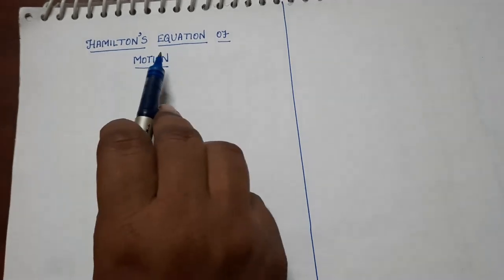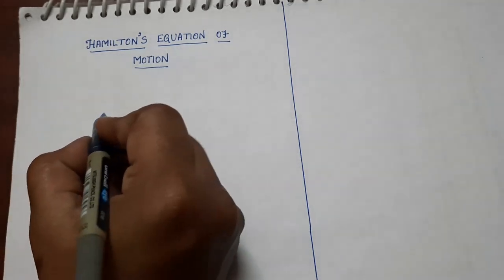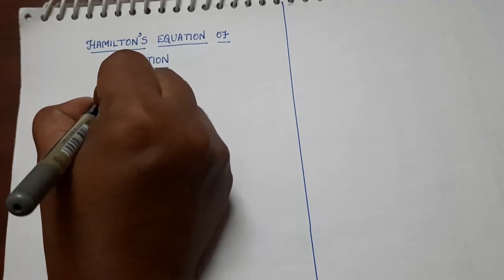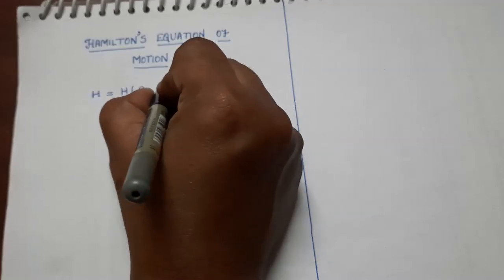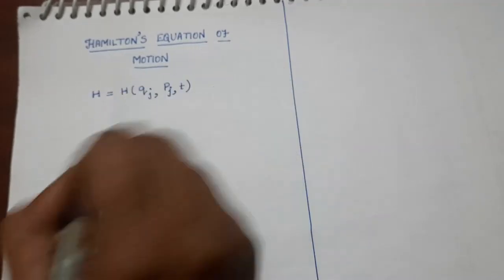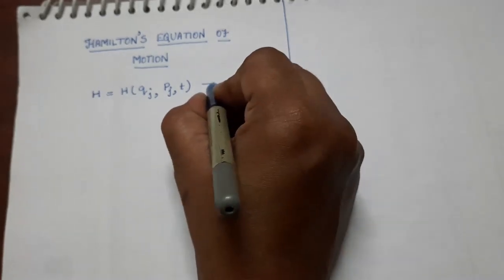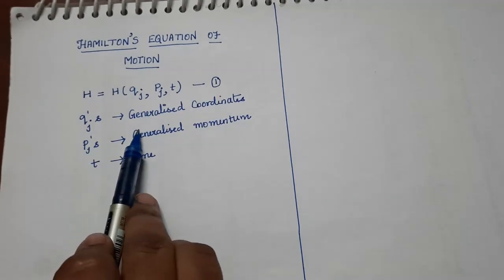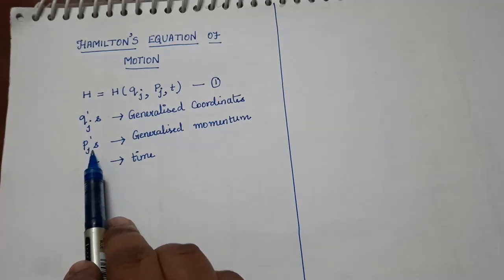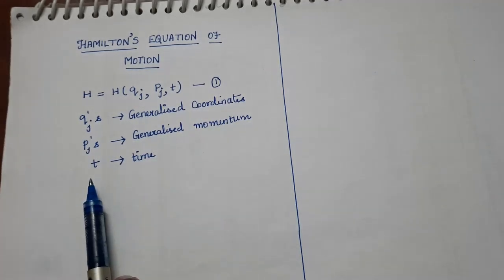In this video, let us derive Hamilton's equations of motion. These set of equations are also called Hamilton's canonical equations. We know the Hamiltonian function H is a function of qj, pj, and t — taken as equation number 1. Here, qj's are generalized coordinates, pj's are generalized momenta, and t is time.